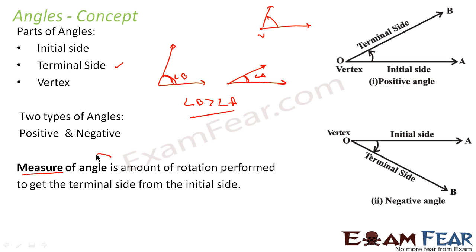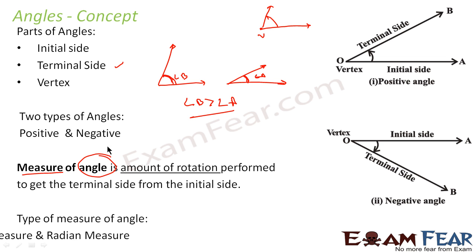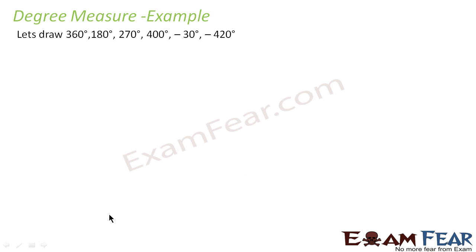An angle is the amount of rotation performed to get the terminal side from the initial side. The amount of rotation performed about the vertex is called the measurement of the angle. There are two types of measures: degree and radian. Here we will be more concerned about degree measure; we will learn radian measure in the next class.